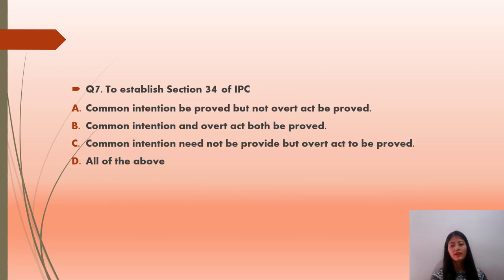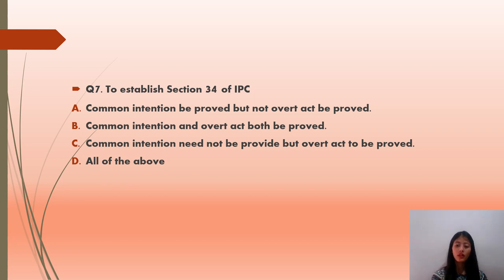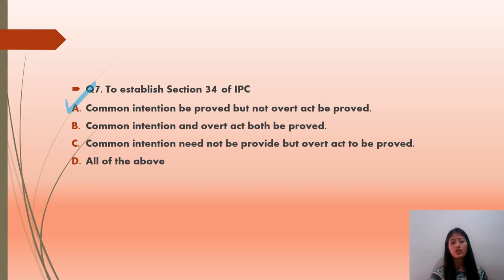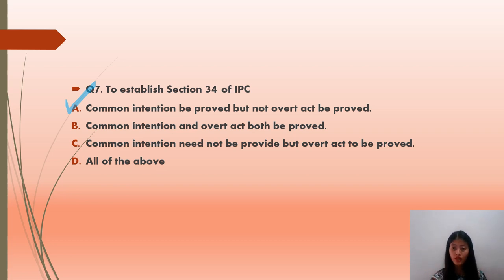Question number 7: To establish Section 34 of IPC — option A: common intention be proved but not overt act; option B: common intention and overt act both be proved; option C: common intention need not be proved but overt act to be proved; option D: all of the above. If you have studied Section 34, option A is correct — common intention must be proved but not the overt act. For this, refer to the case Suresh Sankaram Nagari versus State of Maharashtra, 2012.